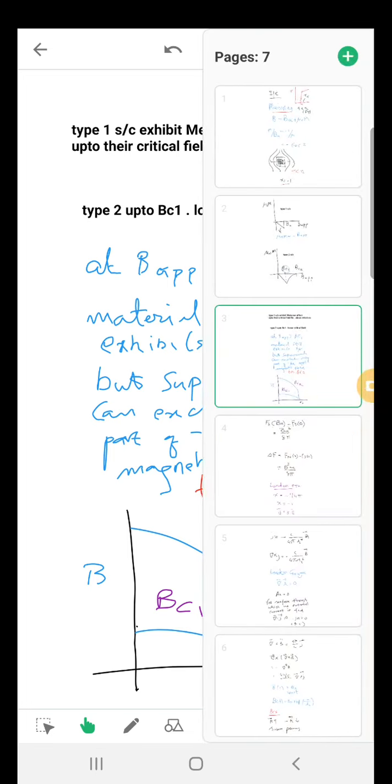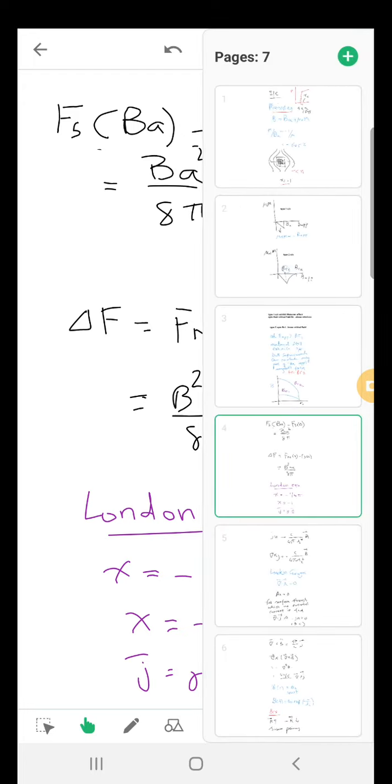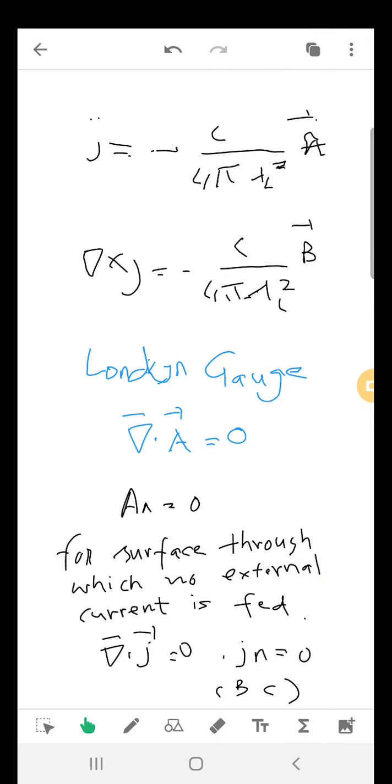The difference in free energy between applied magnetic field and Bc0 magnetic field is Ba²/8π, and the difference is again Bc²/8π. We have the London penetration depth which is given as χ = -1/4π, and this is the equation that we can obtain.